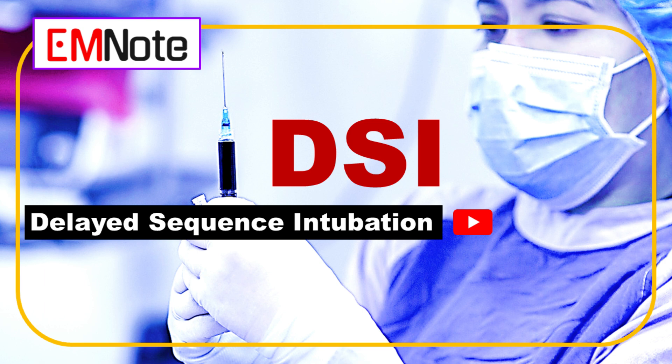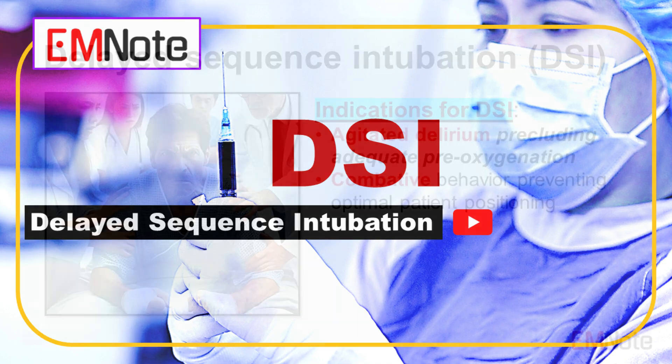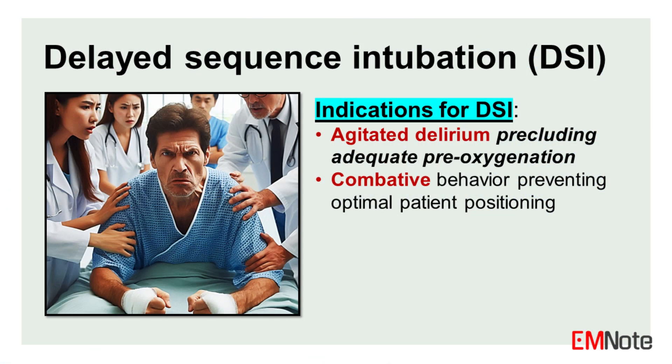Delayed sequence intubation, DSI, is a novel technique for managing the airway in agitated patients who are not tolerating pre-oxygenation prior to endotracheal intubation. It represents a paradigm shift from rapid sequence intubation, which has been the traditional approach for emergency airways.